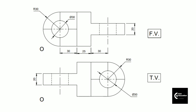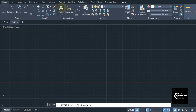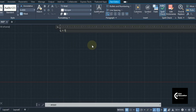The very first thing we are going to start with is the total length, overall length, overall height and the breadth of the object. If you find out the total length from extreme left hand side to extreme right hand side, the radius of the semicircle is 30, so 30 plus 30 is 60, plus 25 is 85, plus 30 is 115, and from the center line the right side distance is the radius of the semicircle, which is 30. So 115 plus 30 gives us a total length of 145.